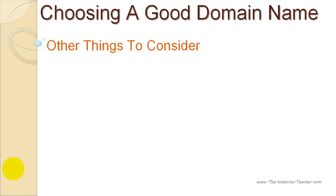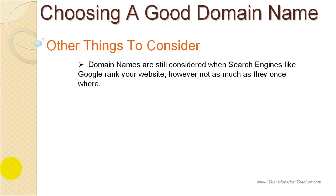Now to cover a few things that will help you in choosing a good domain name. Search engines like Google do still consider the words used in your domain name when they rank your blog in search results. However, they do not rate them anywhere near as strongly as they used to. Google and other search engines understand that it's getting very hard to find a good related domain name, so they put less focus on domain names and more focus on what is actually on your website. So basically, you don't really need to stress too much about getting the perfect domain name.